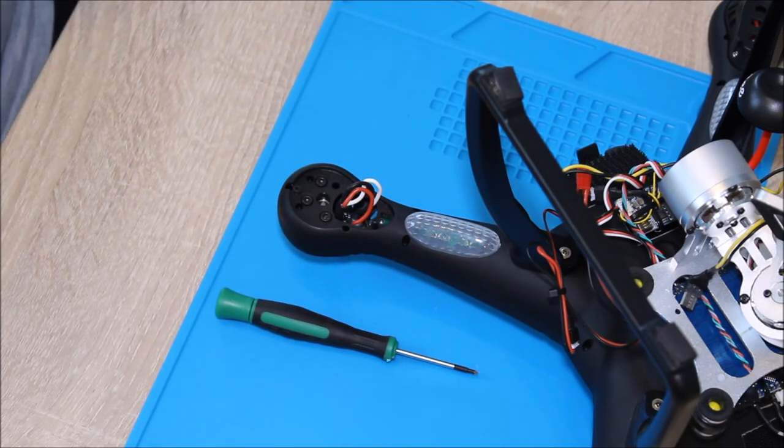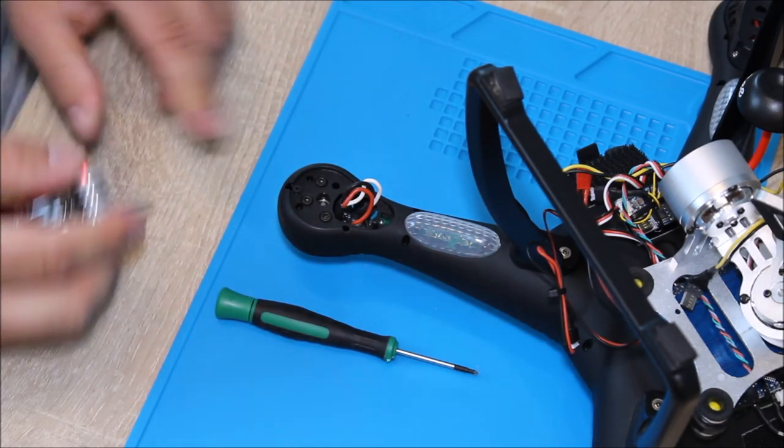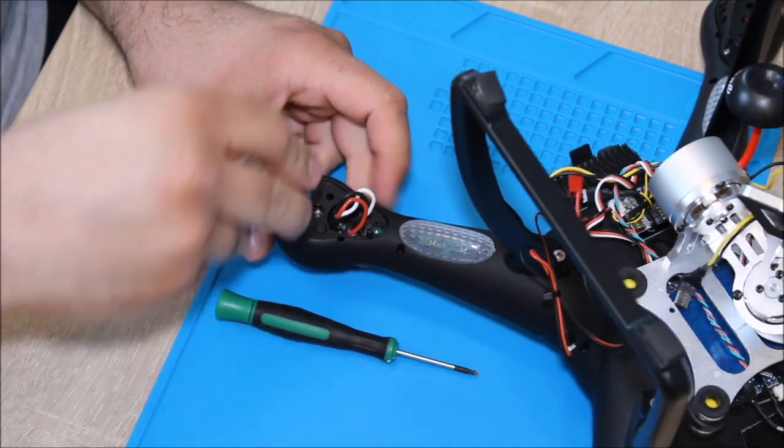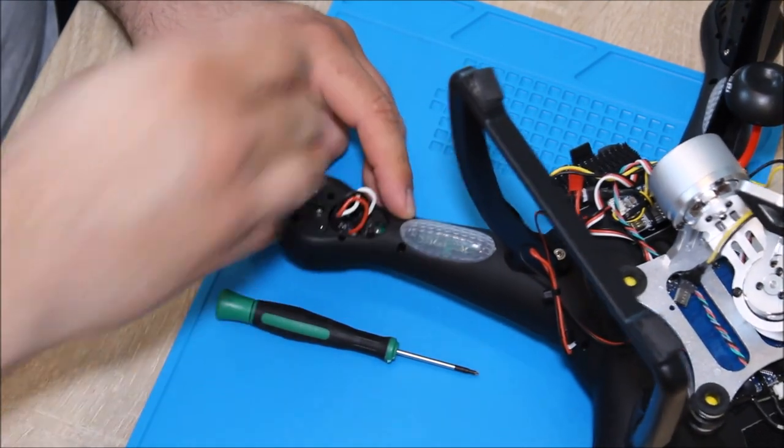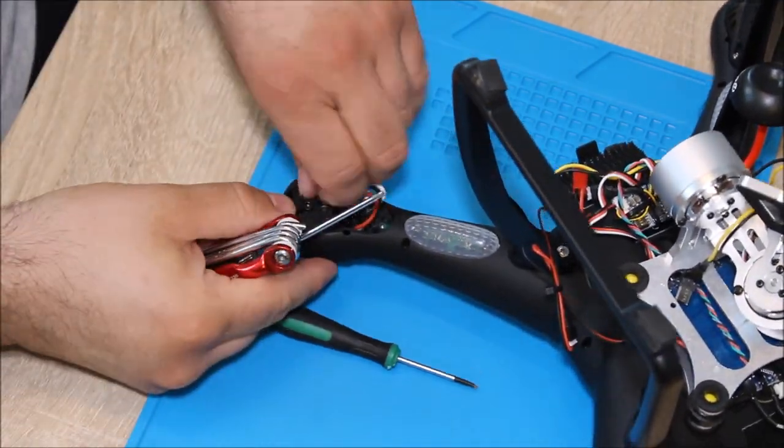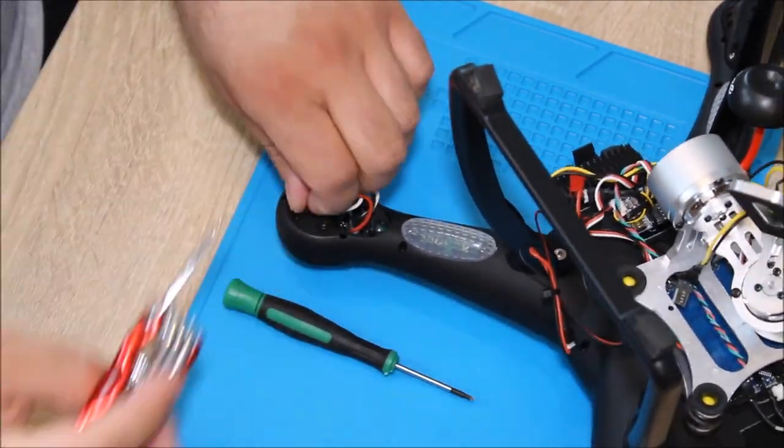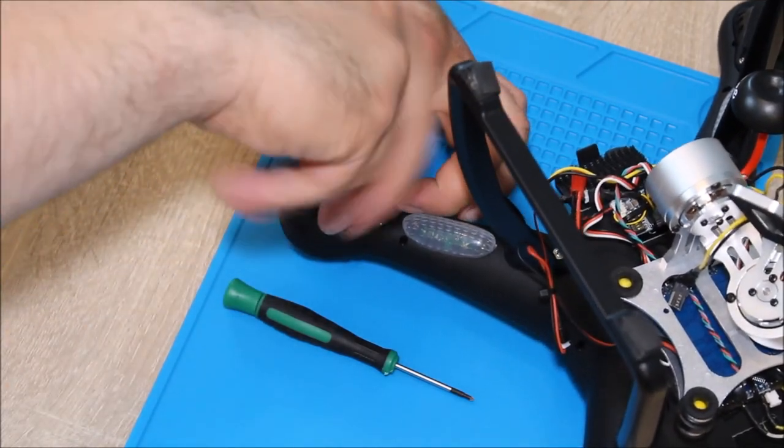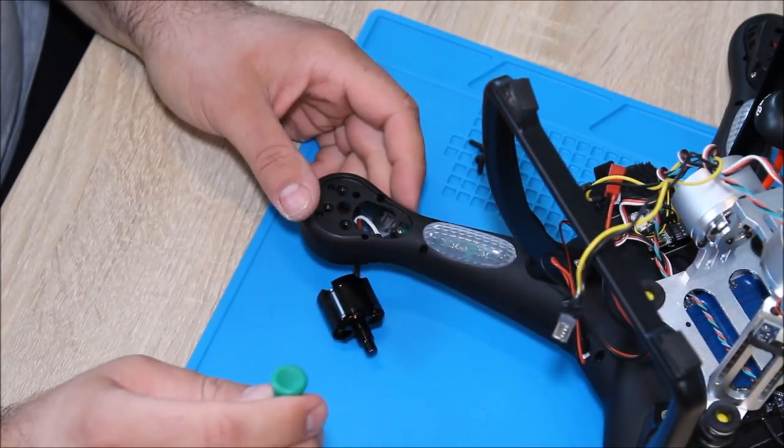We need a Torx T10 to remove these three screws here. The motor is loose now.